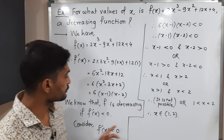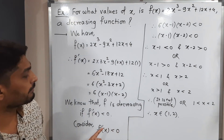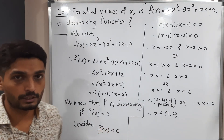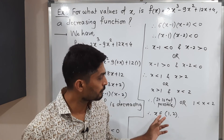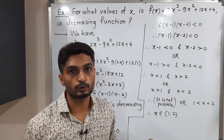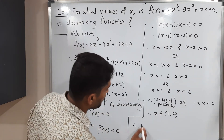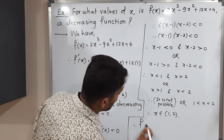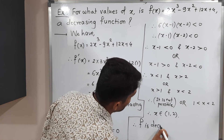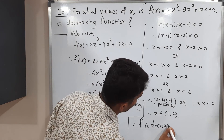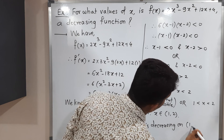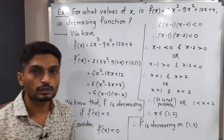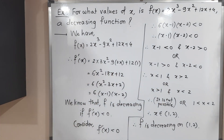We assumed f'(x) < 0, which is the condition for a decreasing function, and we obtained x ∈ (1, 2). Therefore f is a decreasing function on the interval (1, 2). In this way we completed this example.